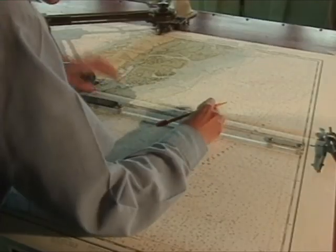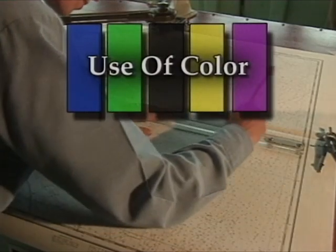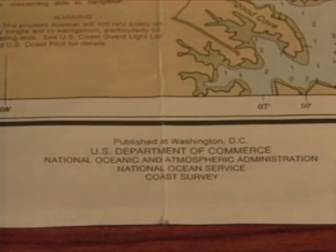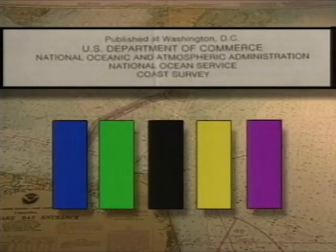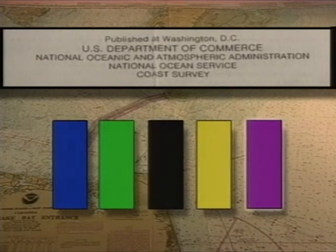Nearly all charts employ color to distinguish various categories of information. Charts you may encounter will come from two sources: the National Ocean Service (NOS) or the National Image and Mapping Agency (NEMA). The NOS color system uses five multipurpose colors, which may appear solid or shaded on charts.